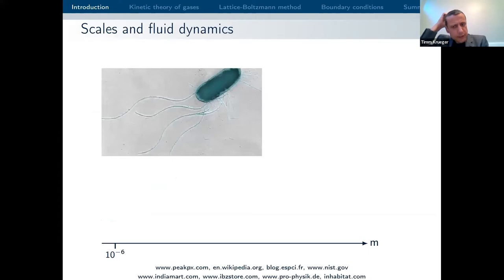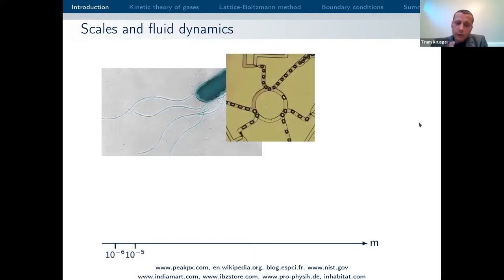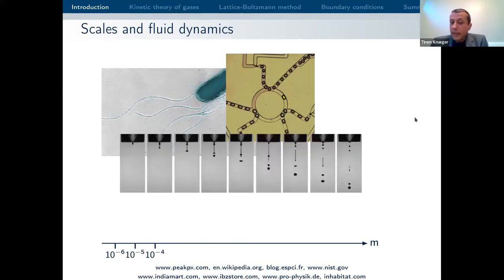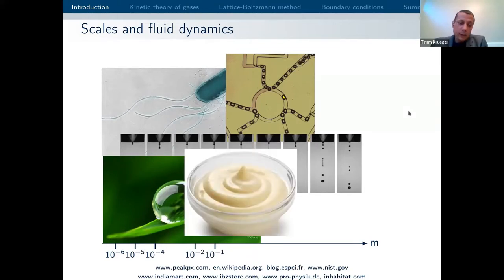What I would like to motivate first is that if you think about fluid dynamics or fluid mechanics, you can find it in all kinds of scales in the world around us. Maybe the smallest scale where we would say we observe fluid mechanics is around one micrometer — you can think about microbes swimming in an aqueous solution. If you go to a slightly larger scale, you can think about droplets in microfluidic devices, inkjet printing — typically happening on a scale below one millimeter — and effects like capillarity on the centimeter or millimeter scale.